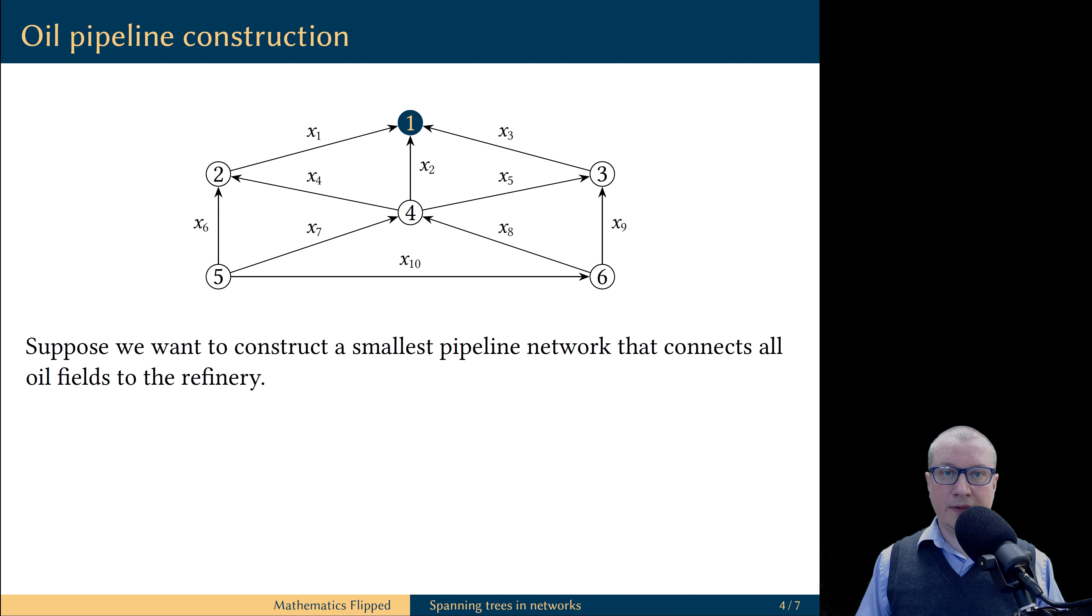For example, in this big original network, we do not need the branch X7. If we delete this branch from the network, the oil from field 5 can still get to the refinery through oil field 2.